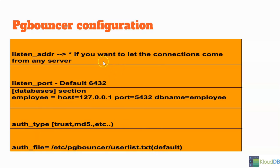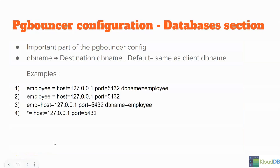So we have seen five important sections: listen address, listen port, databases section, authentication type, and authentication file. Let's move forward.